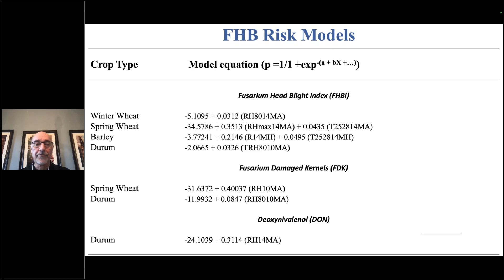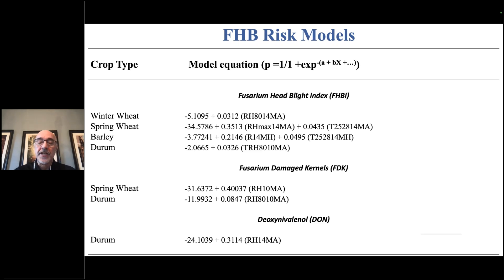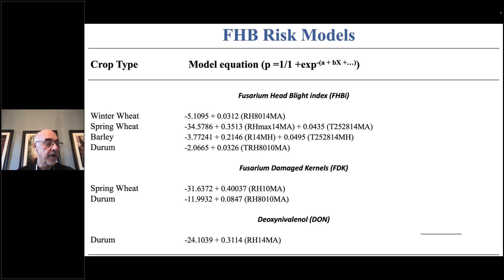Looking at the first model for winter wheat: the FHB index model uses a factor called RH8014MA — literally the number of hours over the previous 14 days where relative humidity was 80% or higher. For spring wheat, the model uses both RH max 14MA (mean maximum humidity over the previous 14 days) and T252814MA (the number of hours air temperature was between 25 and 28°C). Over 80 different weather parameters were considered, all quantifying how favorable conditions are for Fusarium development — some form of relative humidity, air temperature, or rainfall.